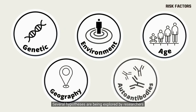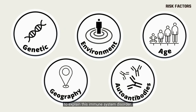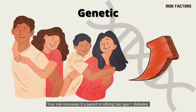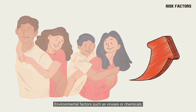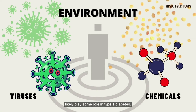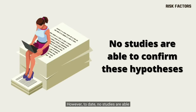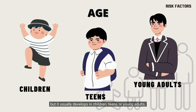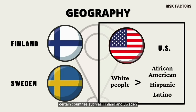Several hypotheses are being explored by researchers to explain this immune system disorder. Genetic factors have been identified — your risk increases if a parent or sibling has type 1 diabetes. Environmental factors such as viruses or chemicals likely play some role in type 1 diabetes. However, to date, no studies are able to confirm these hypotheses. You can get the disease at any age, but it usually develops in children, teens, or young adults. In terms of geography, certain countries such as Finland and Sweden have higher rates of type 1 diabetes.